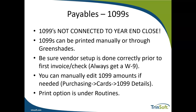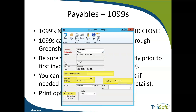Once 1099s are set up and complete, you can print your 1099s through GP under the Routines pane, or you can use Aatrix. If you're using the Routines pane, you enter your federal ID number, enter your 1099 year and type, select any form type needed, narrow down by vendors if applicable, and then hit Print.